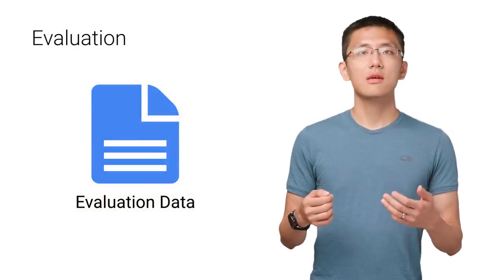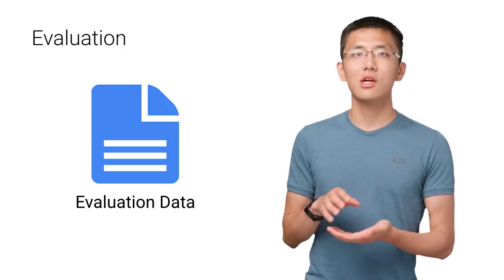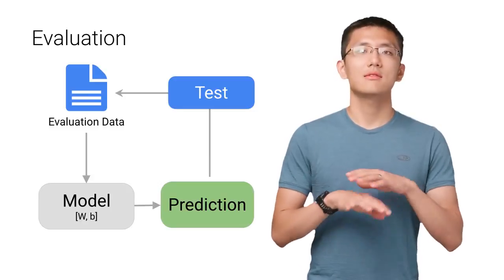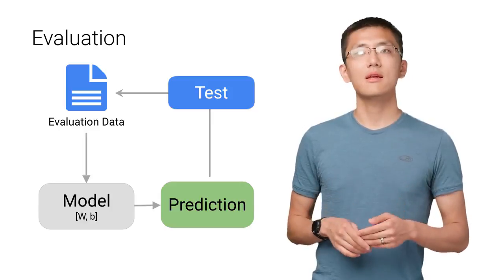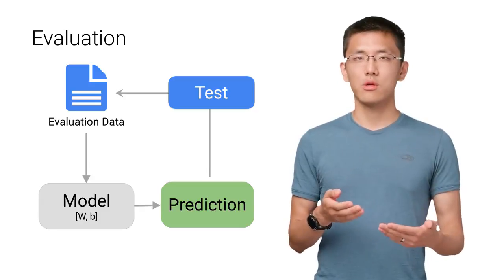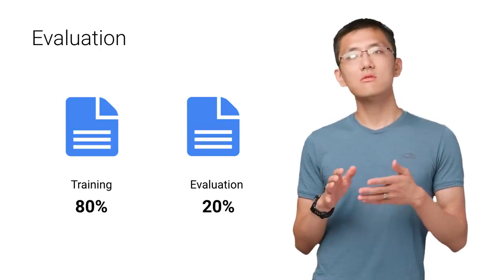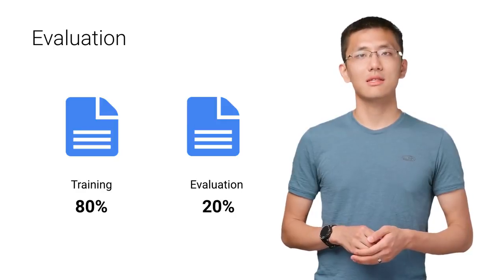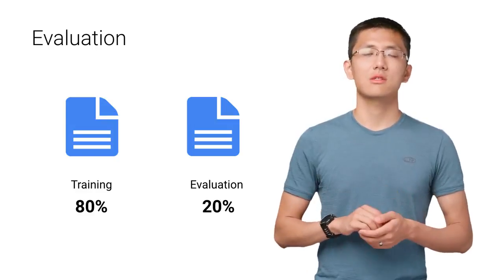Once training is complete, it's time to see if the model's any good using evaluation. This is where that dataset that we set aside earlier comes into play. Evaluation allows us to test our model against data that has never been used for training. This metric allows us to see how the model might perform against data that has not yet seen. This is meant to be representative of how the model might perform in the real world. A good rule of thumb I use for a training evaluation split is somewhere on the order of 80-20 or 70-30. Much of this depends on the size of the original source dataset. If you have a lot of data, perhaps you don't need as big of a fraction for the evaluation dataset.